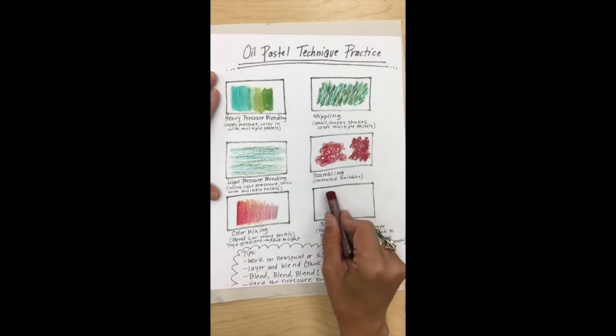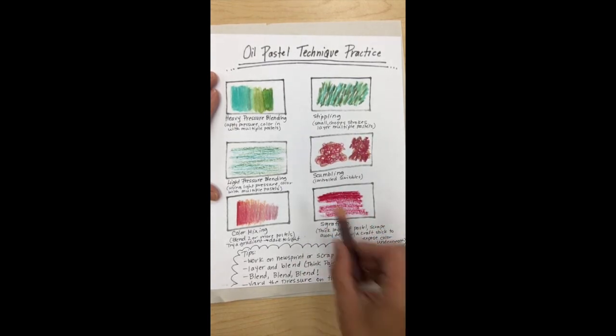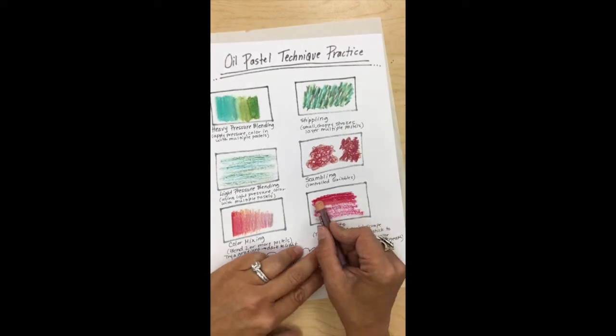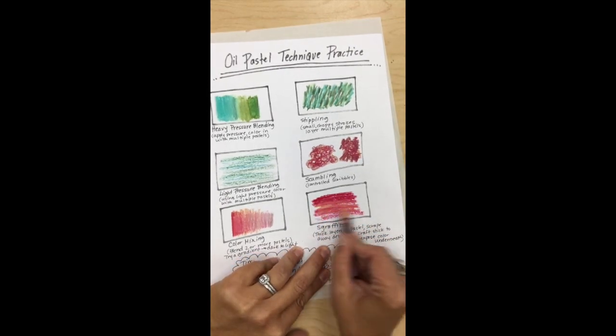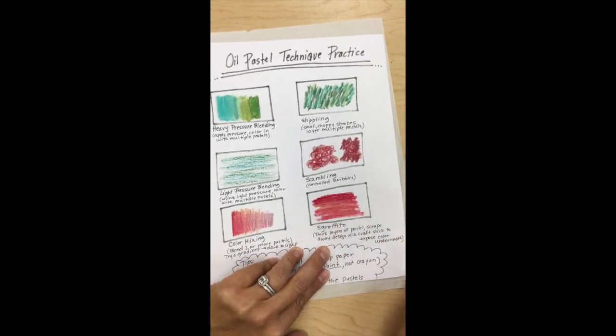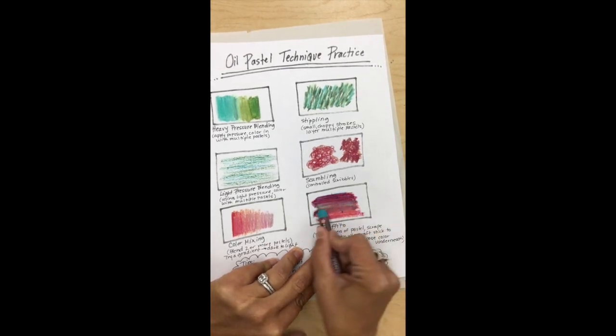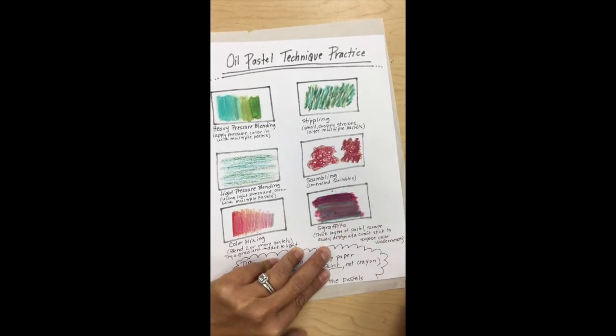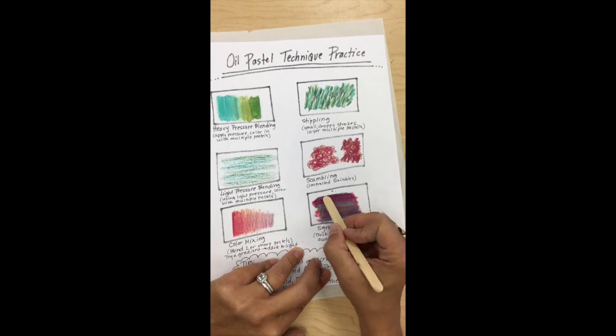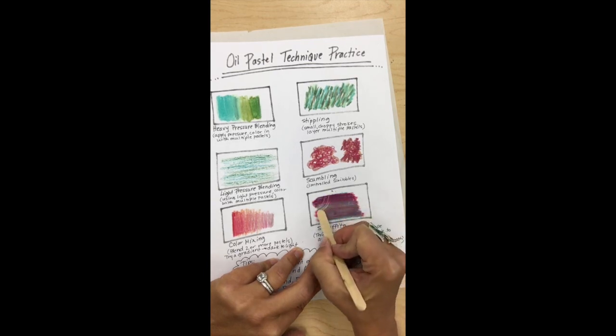And sgraffito is pretty fun. You can put down a layer of pastel first, so you can blend, this doesn't have to be one color, kind of thick. I'm gonna put another color over the top, that wasn't too dark.